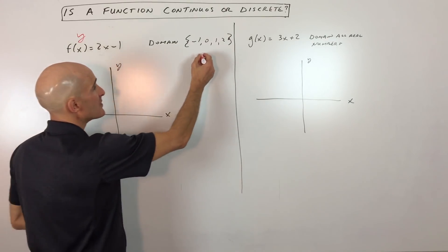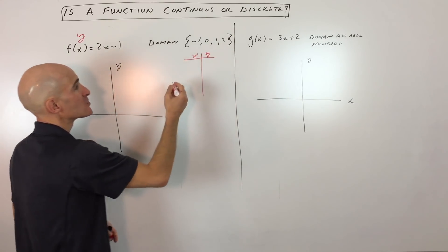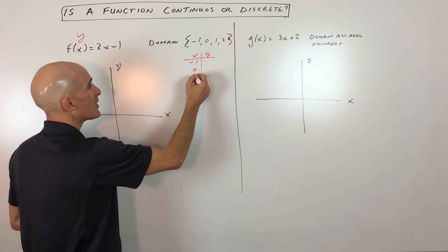And then the range, those are going to be the outputs. Those are the y values. So let's just make a table here, negative 1, 0, 1, and 2.